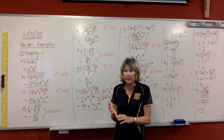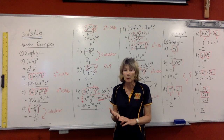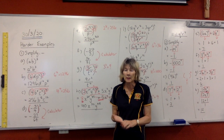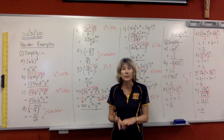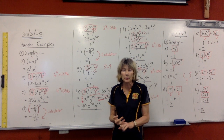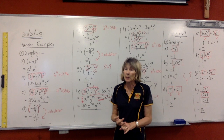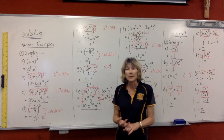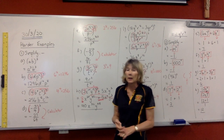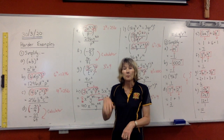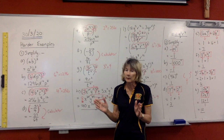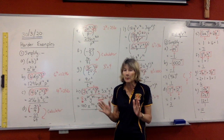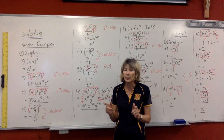Remember, there are four index rules. When you're multiplying things with the same base, keep your base and add your indices. When you're dividing things with the same base, you keep your base and subtract your indices. If you have an index inside and outside a bracket, you keep your base and multiply your indices.